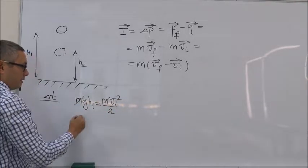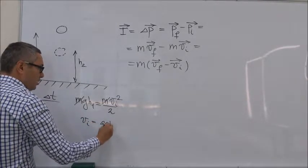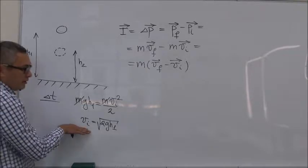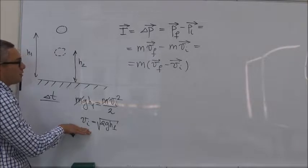If I cancel M, I get V initial equals square root of 2GH1. So, this is the initial velocity of the ball, that is the velocity of the ball just before the collision.